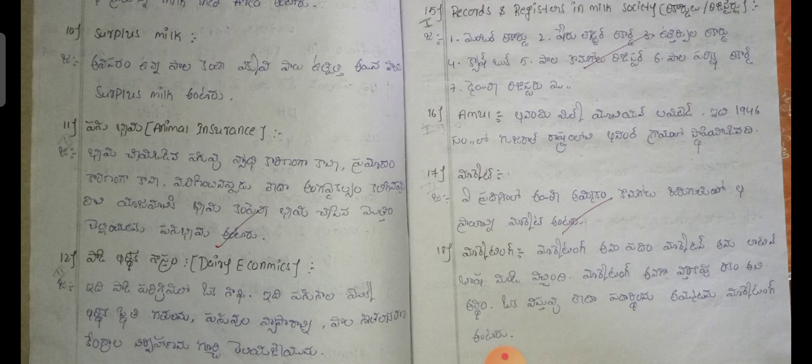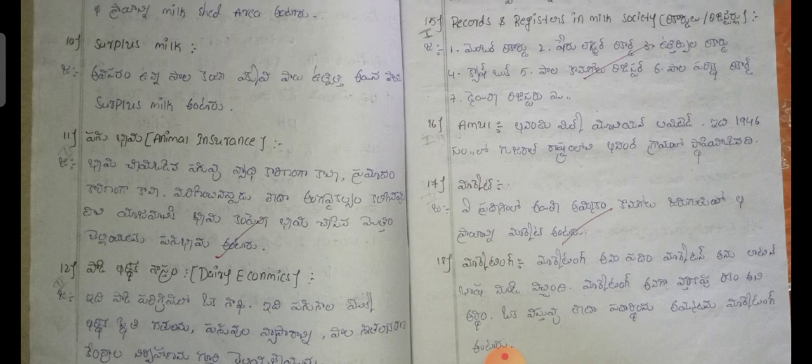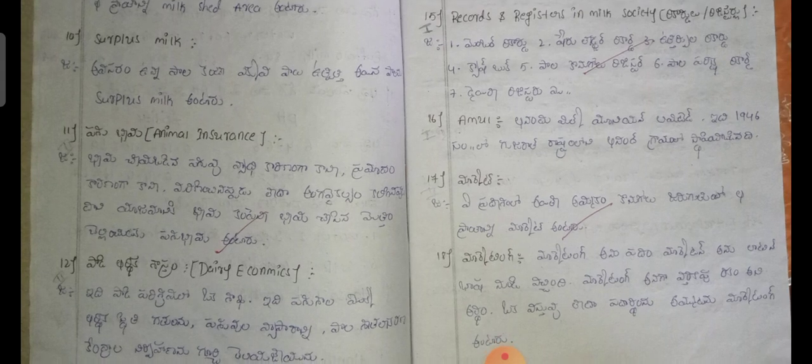AMUL stands for Anand Milk Union Limited. A for Anand, M for Milk, U for Union, and L for Limited. Anand Milk Union Limited is a major dairy cooperative.